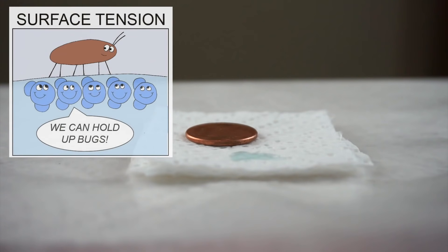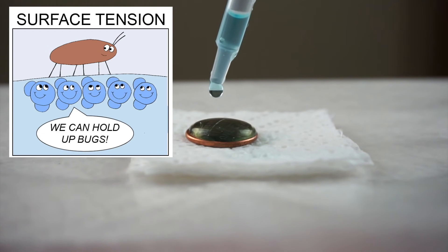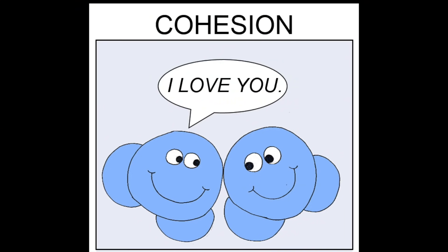Surface tension. It's the property of water that lets bugs stride around on the surface of a pond and lets us fit way more drops of water on a penny than you'd think possible. And it's all thanks to cohesion.